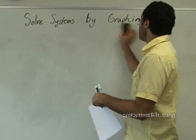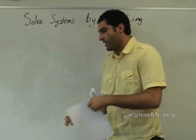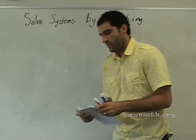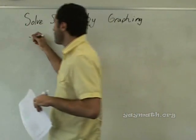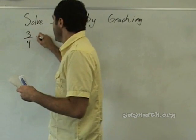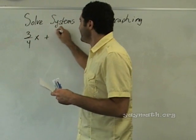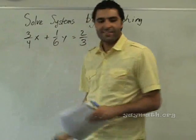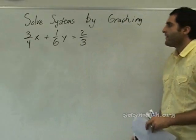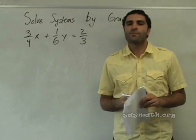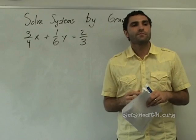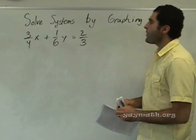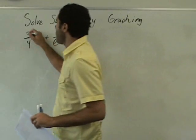Let's flip the paper and do Example D. We have fractions — three over four. What's a good way to simplify this? You want to multiply both sides by 12? Sure, let's do it. If we multiply both sides by 12, go ahead and do that — don't forget to distribute.